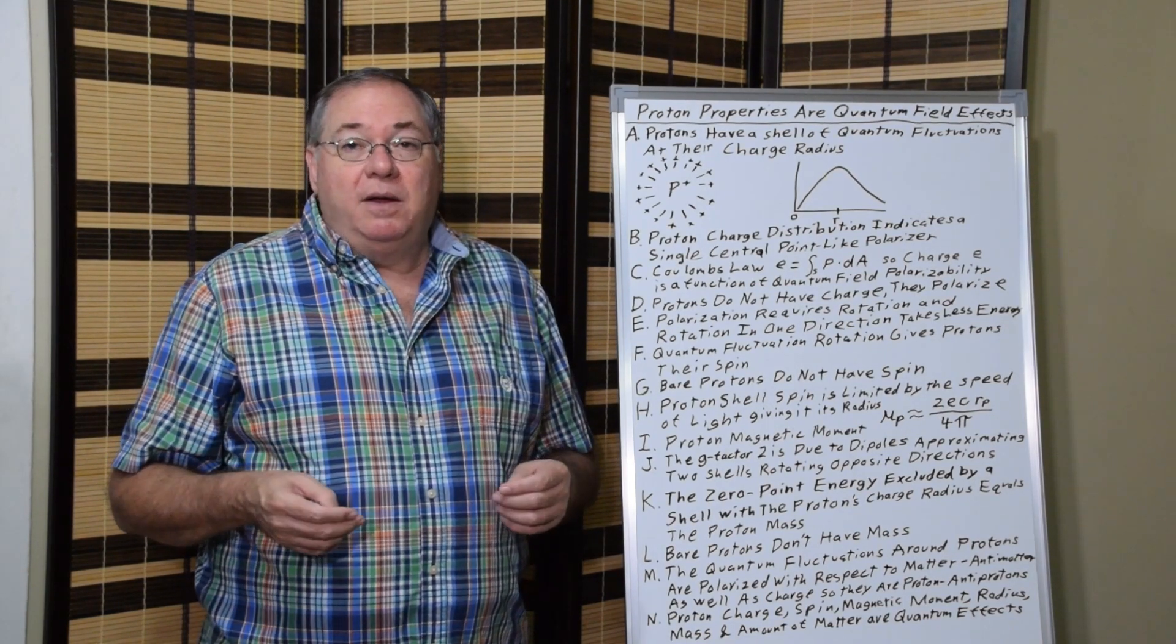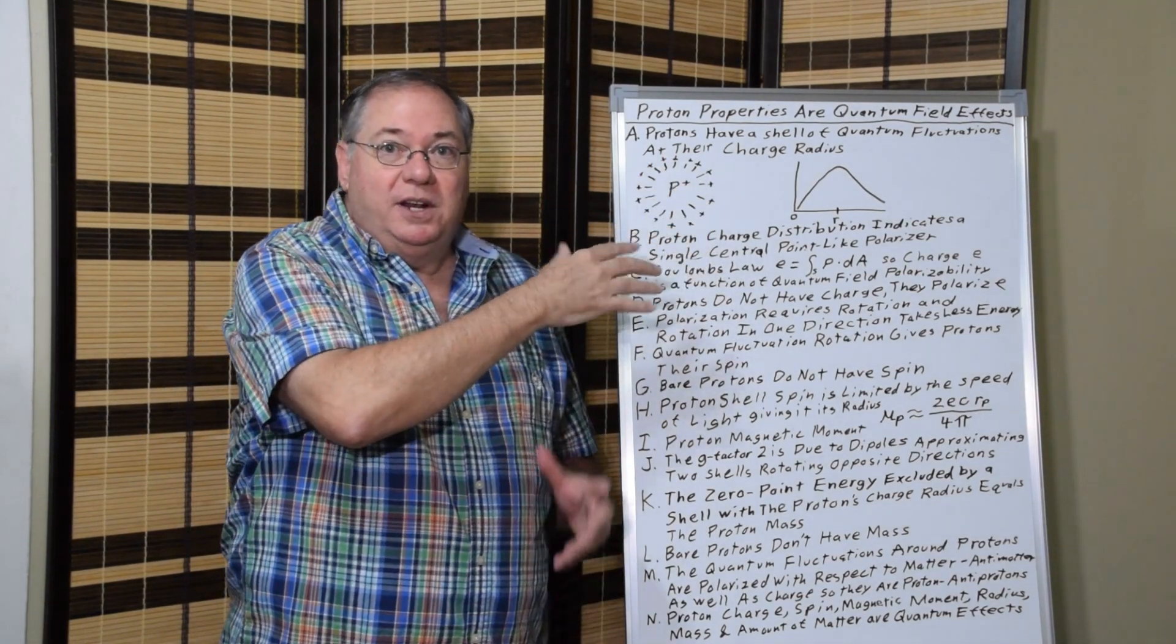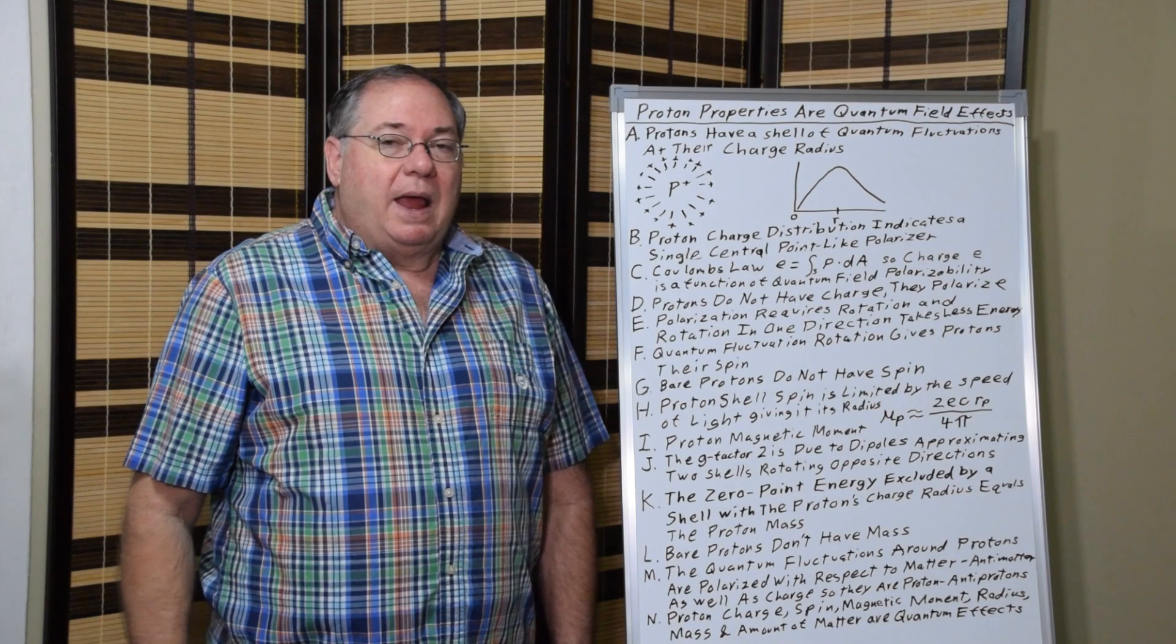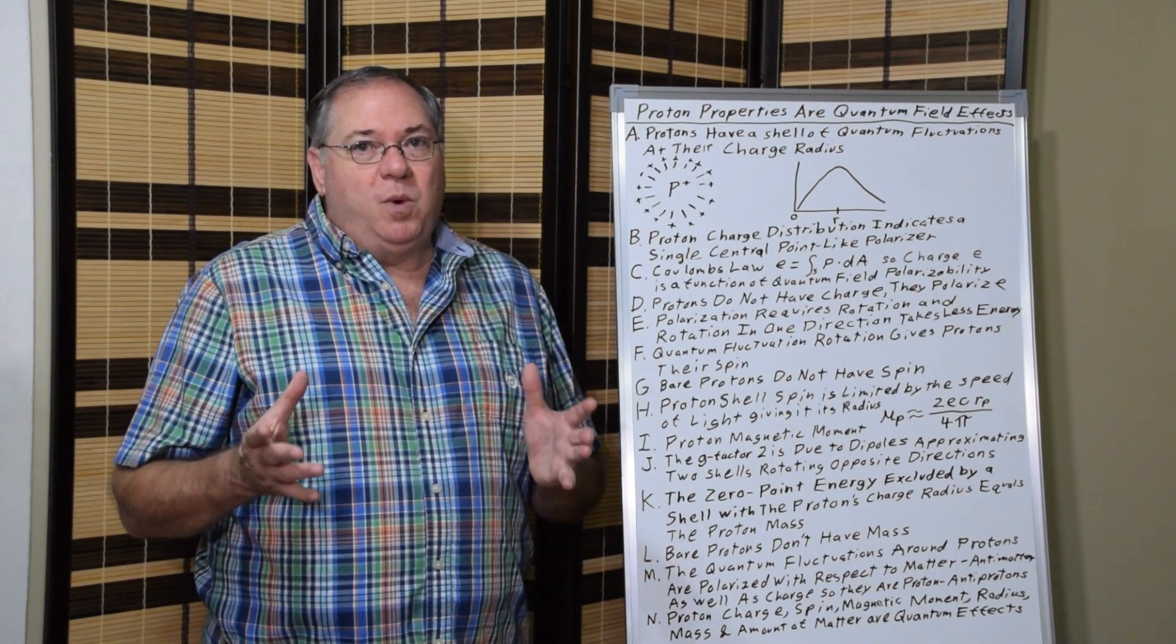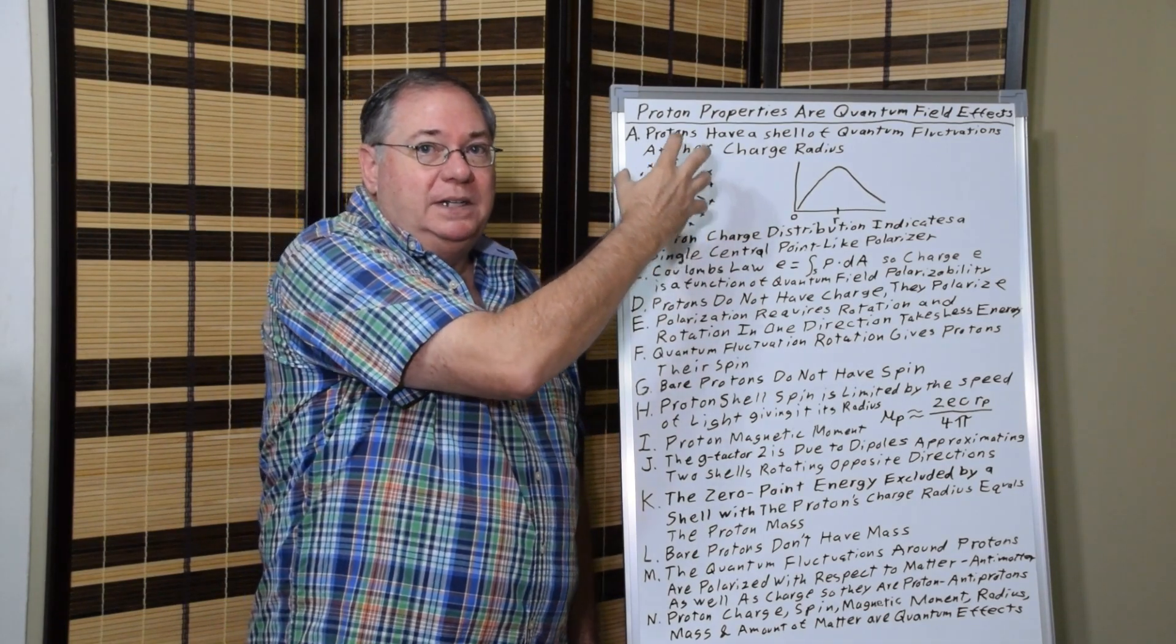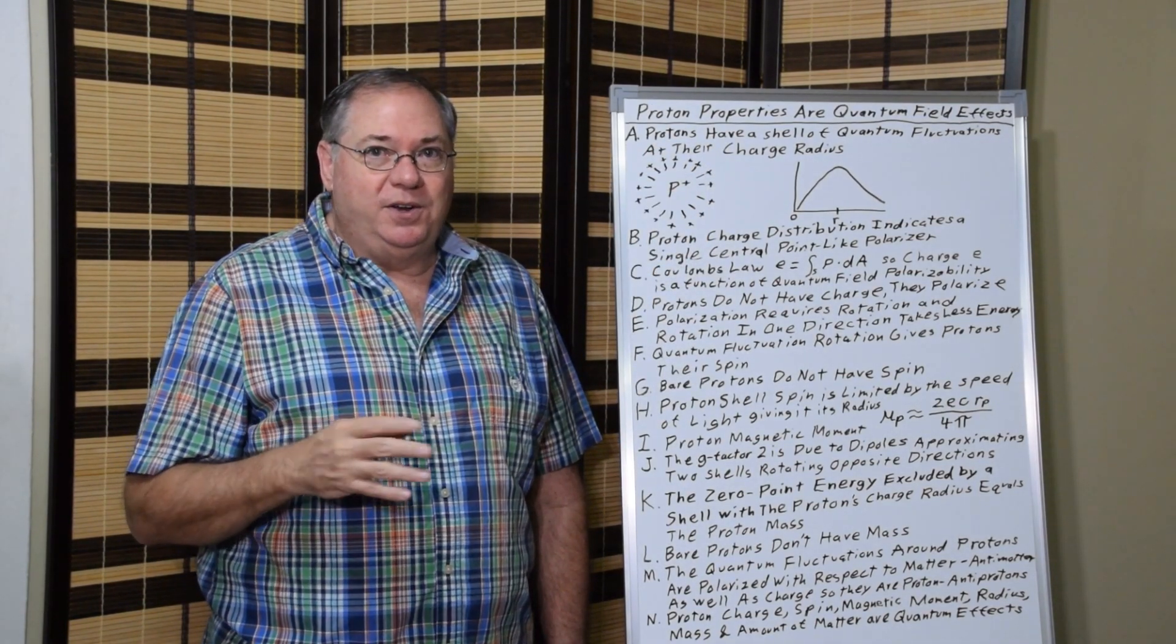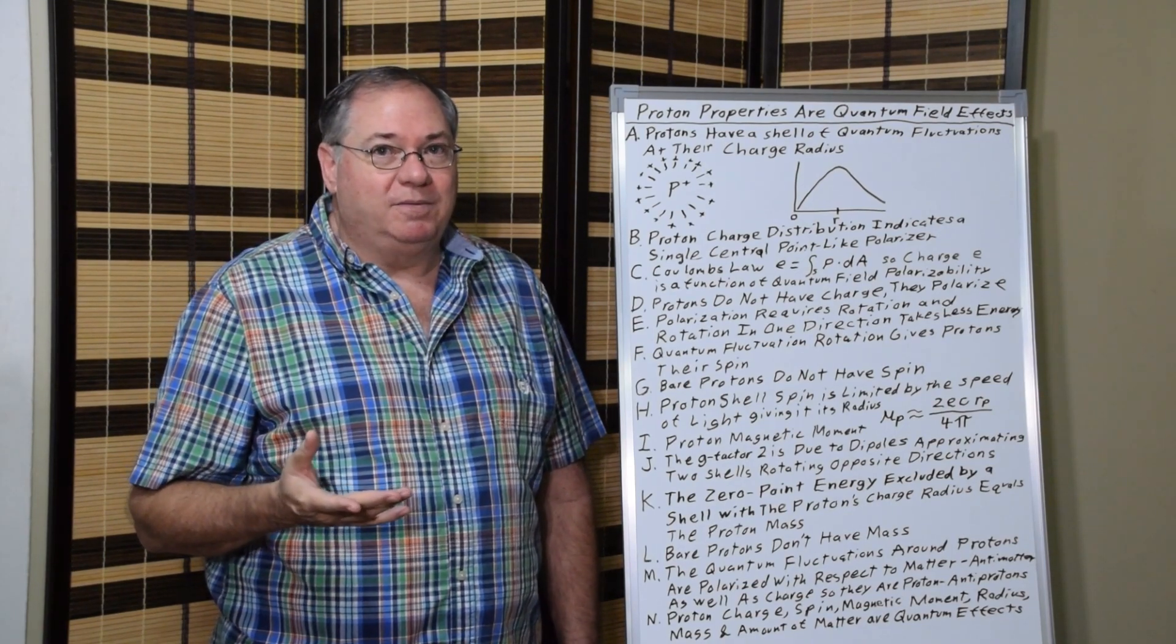And now the prevailing theory is that what it's scattering off of is a shell of quantum fluctuations. Well, the important thing is we can account for all of the proton properties just from the shell alone. We don't need to introduce quarks to account for the shell.